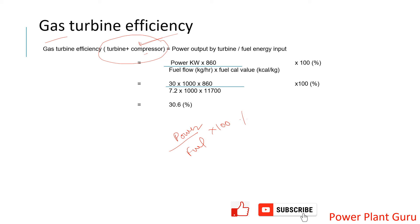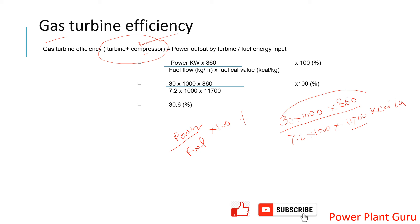For efficiency, using our example of 30 megawatts output: 30 × 1000 = 30,000 kW. Multiplying by 860 (the factor to convert power into heat value in kcal) gives your output in kcal/hr. Dividing by the heat input — 7,200 kg/hr fuel × 11,700 kcal/kg — this comes out to close to 30.6%. So the open cycle turbine efficiency is approximately 30-something percent.